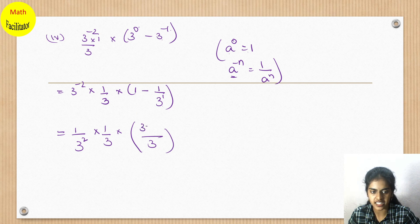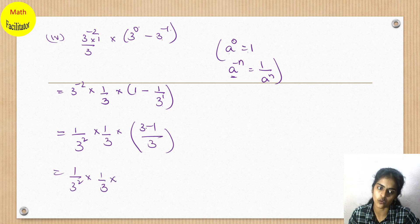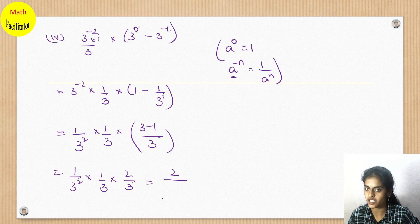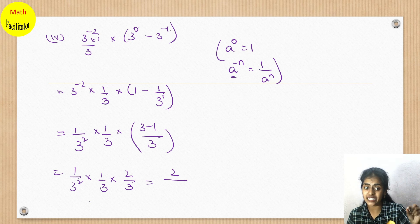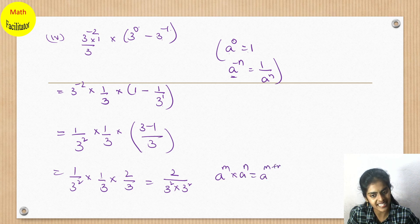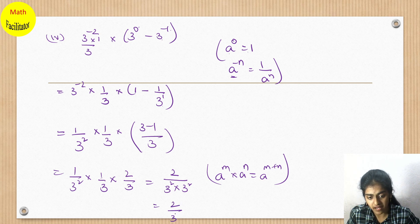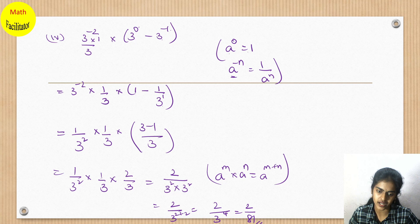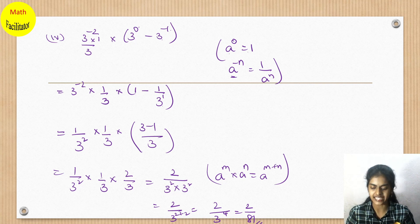So we have 1 by 3 squared into 1 by 3, multiplied by 2 by 3. The denominator is 3 squared into 3 into 3, which is 3 squared again — using a power m into a power n equals a power m plus n. So the denominator becomes 3 to the power 2 plus 2 equals 3 to the power 4, which is 81. The final answer is 2 by 81.